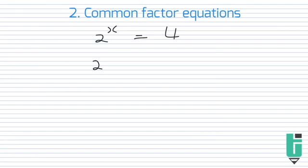So on the left hand side, we have 2^x. And on the right hand side, we can simplify 4 to 2^2. And thus, x is equal to 2.